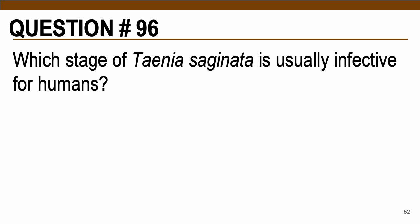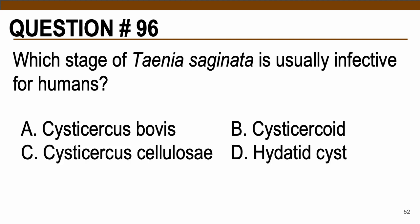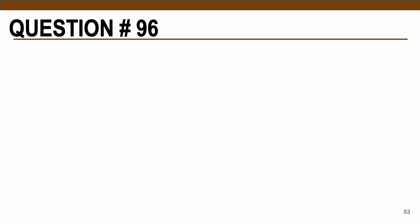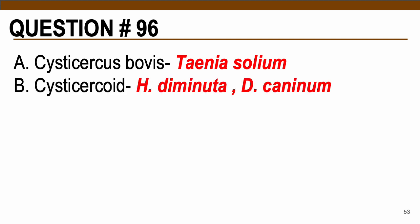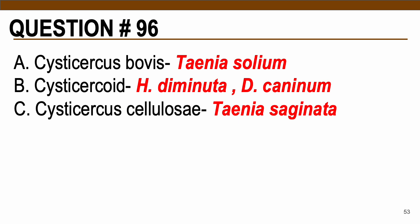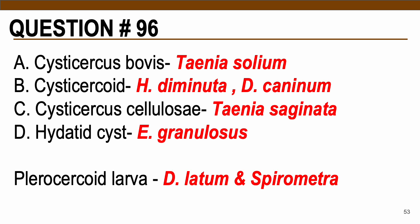Question number 96: Which stage of Taenia saginata is usually infective for humans? Choices: A — cysticercus bovis, B — cysticercoid, C — cysticercus cellulosae, D — hydatid cyst. The correct answer is letter A, cysticercus bovis. For Hymenolepis diminuta and Dipylidium caninum, the infective stage is cysticercoid larva. For Taenia solium, it is cysticercus cellulosae. For Echinococcus granulosus, hydatid cyst. For the pseudophyllidean group — Diphyllobothrium and Spirometra — the infective stage is the plerocercoid larva.